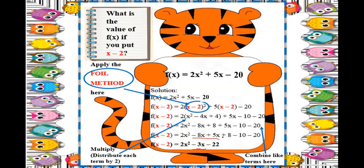Then copy minus 20. Negative 2 and negative 20 have the same sign, so add them: 2 plus 20 is 22, copy the negative sign, giving negative 22. So the final answer is 2x squared minus 3x minus 22.